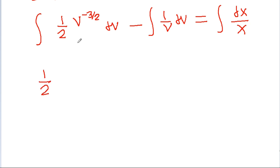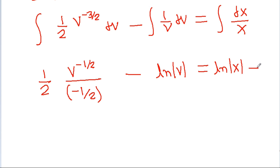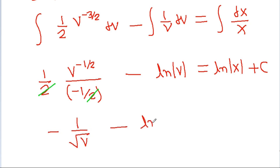Now we get (1/2) times the integration of v^(-3/2) dv will be v^(-1/2) divided by (-1/2), minus the integration of 1/v dv will be ln|v|, is equal to the integration of dx/x which is ln|x|, plus a constant c. The 2 and 1/2 cancel, giving minus 1/√v minus ln|v| equals ln|x| plus c.